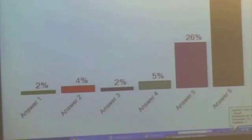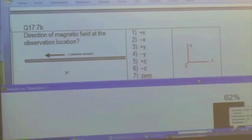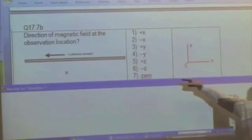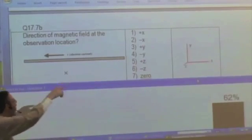Okay, so most of us are saying answer 6, which is the negative z direction. Be careful with the sign. This is the direction of electron current, not conventional current. The direction of the conventional current is the other way.